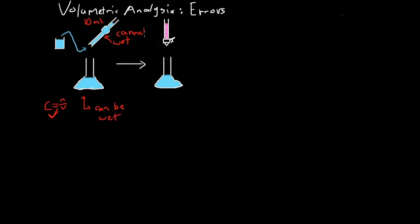Another source of error, somewhat obviously, is if we don't fill the pipette to the right level. If we under- or overfill the pipette, then we're going to have more or less than 10 milliliters of solution. That's going to affect the number of moles of solution we have in the flask, which will affect our final calculation for the concentration of the unknown solution, no matter whether the burette or the pipette contains the unknown solution.